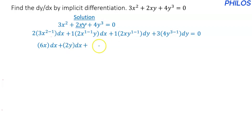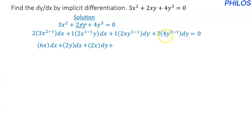Then for the 2xy term differentiated with respect to y: 1 minus 1 is 0, and y to the power of 0 is 1, so 1 times x times 2 is 2x. That gives us 2x dy. And for the last term, 3 minus 1 is 2, and 3 times 4 is 12, so we get 12y squared dy, equals 0.